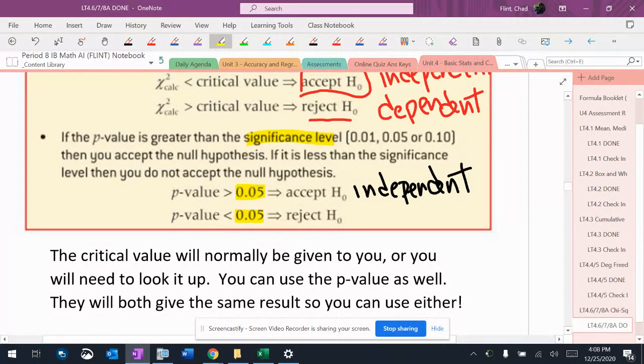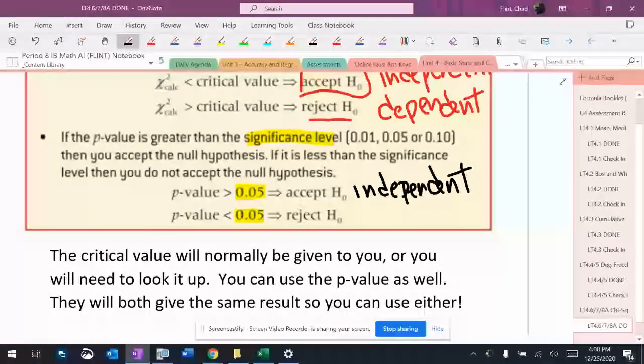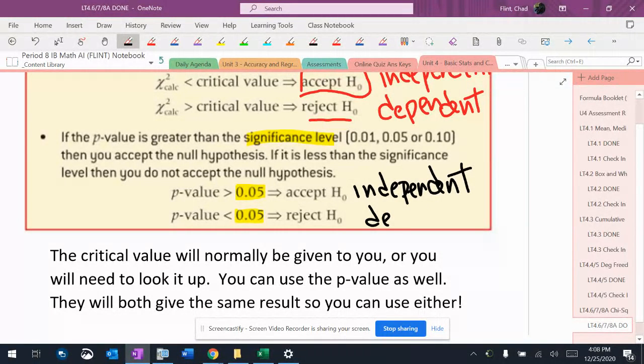This is the significance level right here. I'm not sure why the book put that in there. So if the p-value is less than the significance level, then you reject the null hypothesis, and it would be dependent.